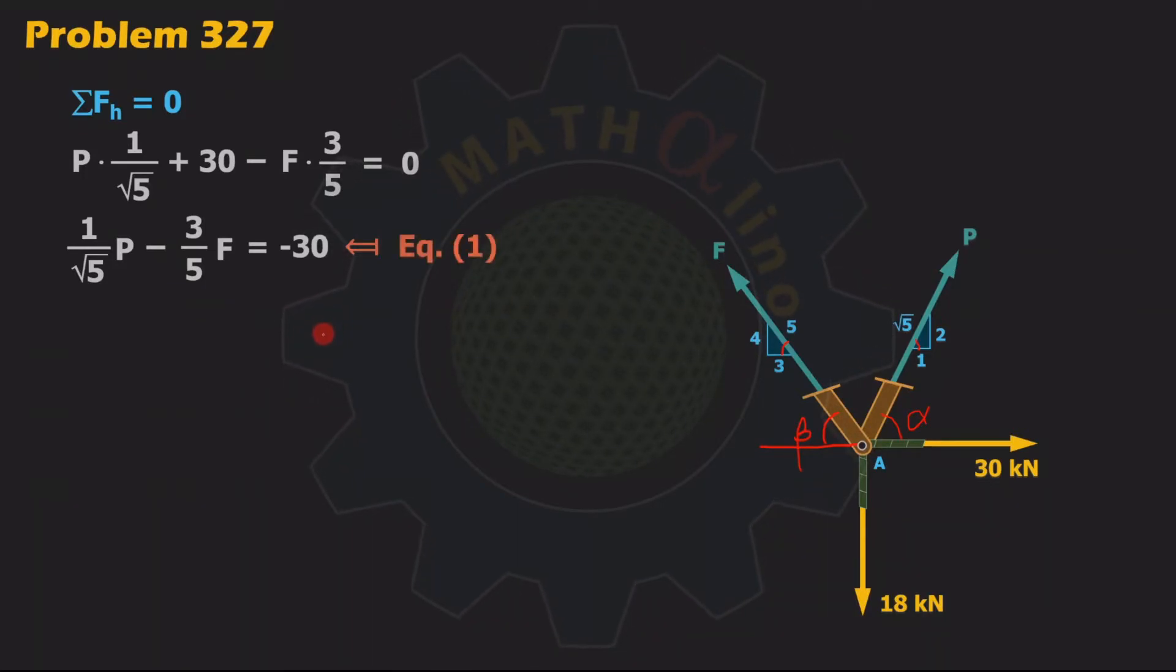Summation of forces in the vertical direction 0. Upward forces minus downward forces equals 0. Upward force, the vertical component of this P: sine of alpha for the vertical component, opposite 2 over the hypotenuse square root of 5, that will become 2 over square root of 5.